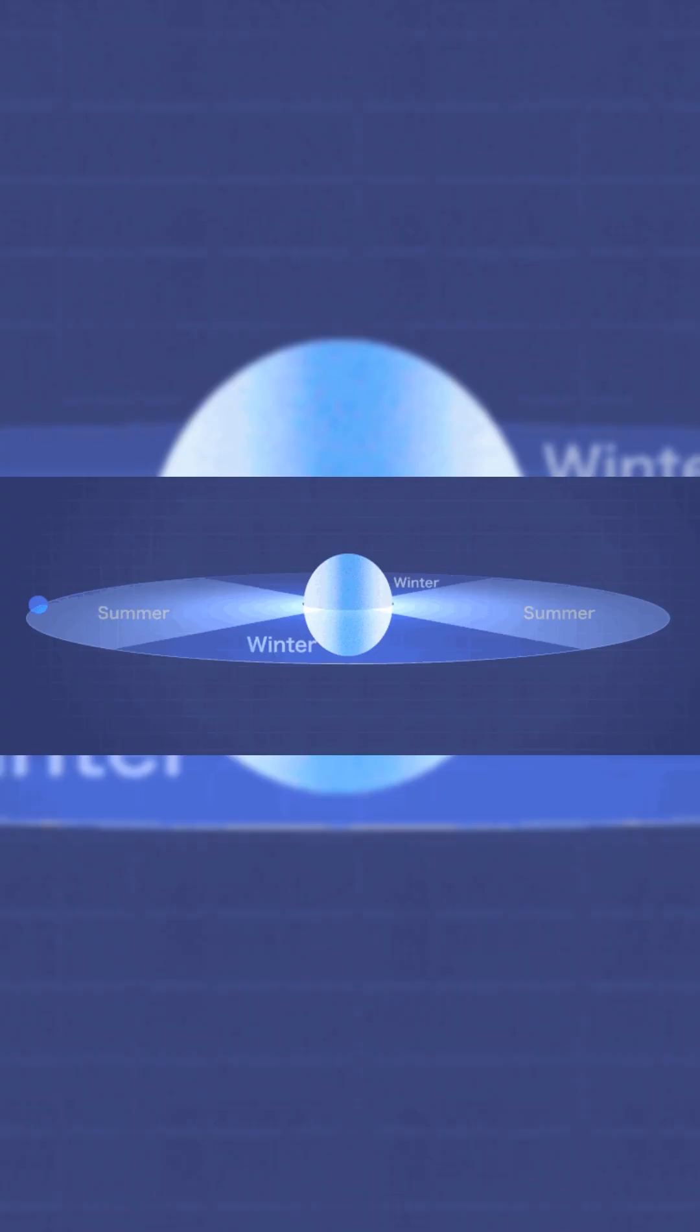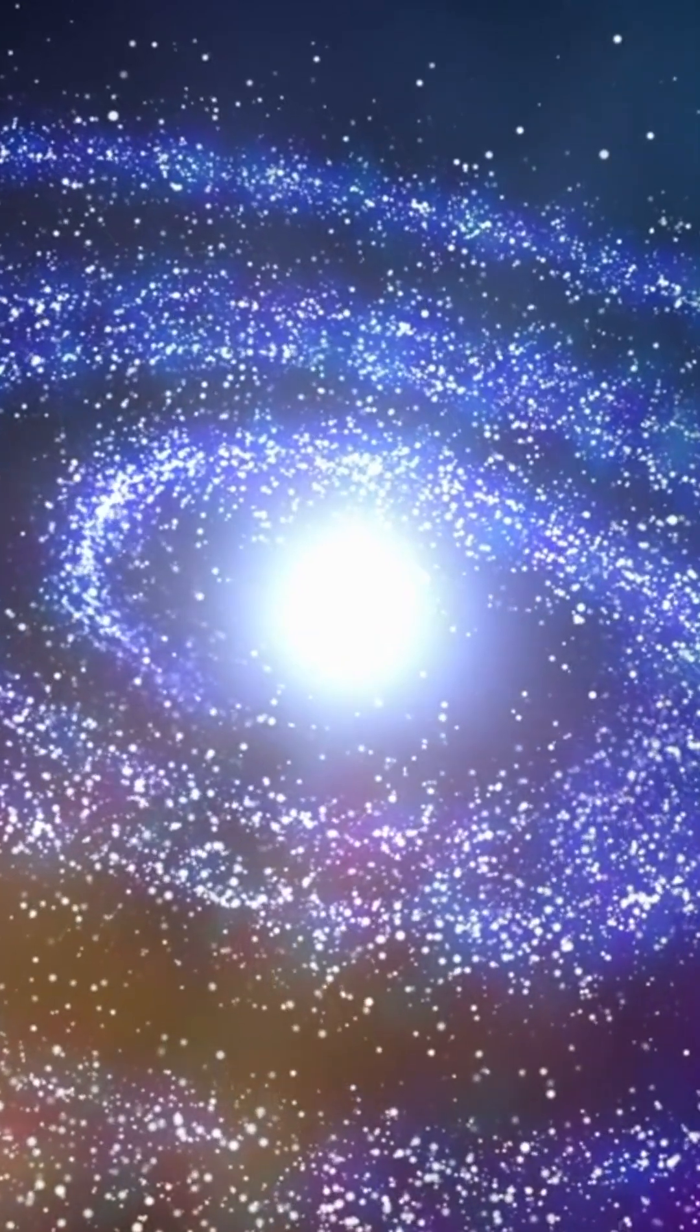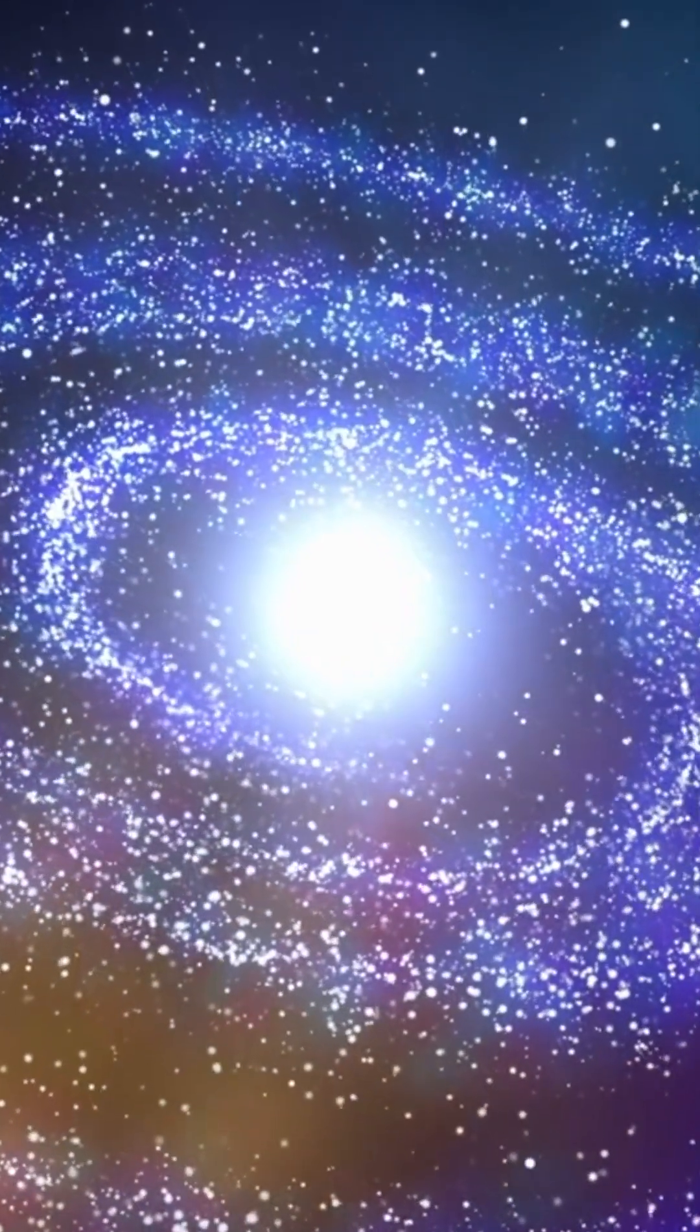The star's heat evaporates iron from KELT-9b's surface, creating a captivating comet-like tail spanning tens of thousands of miles. This exoplanet pushes cosmic boundaries, challenging our understanding of celestial limits.